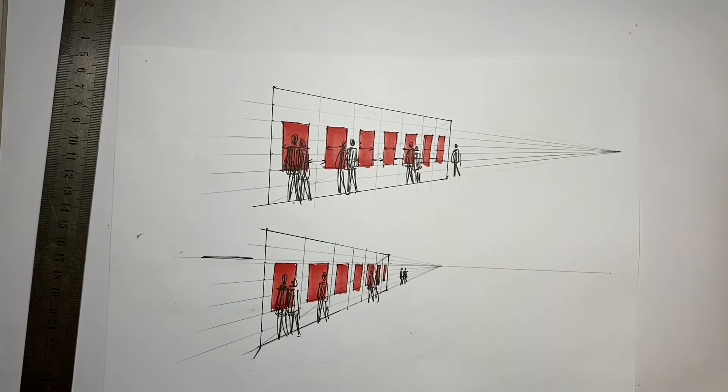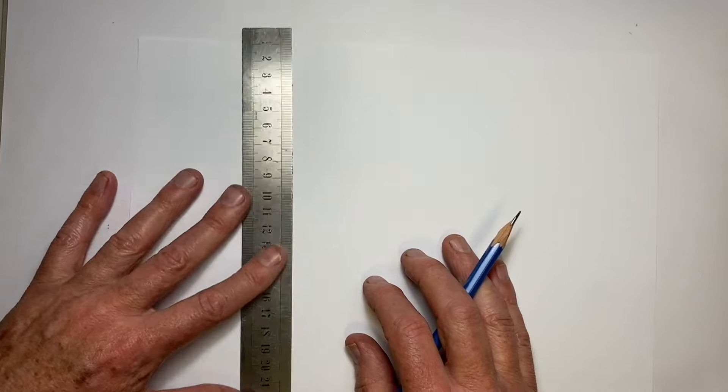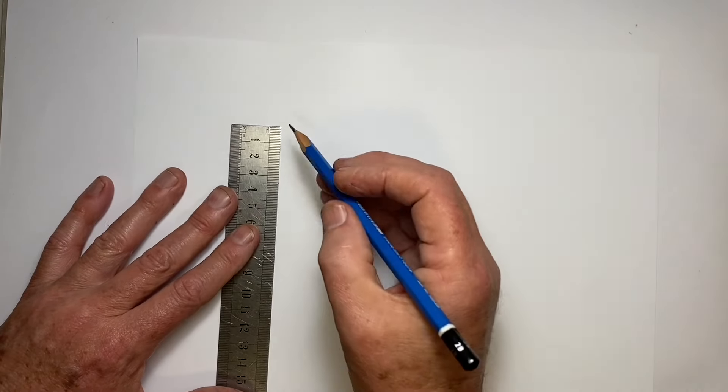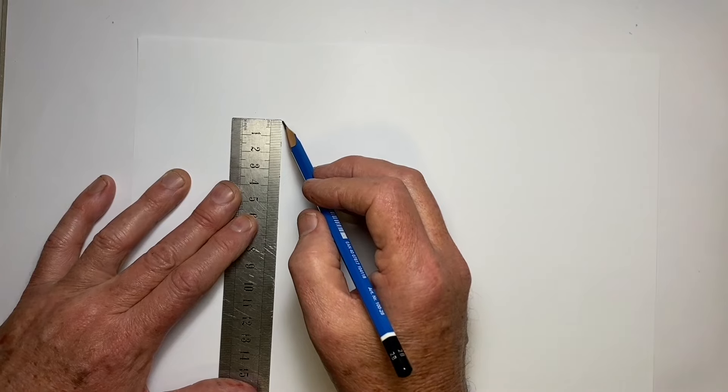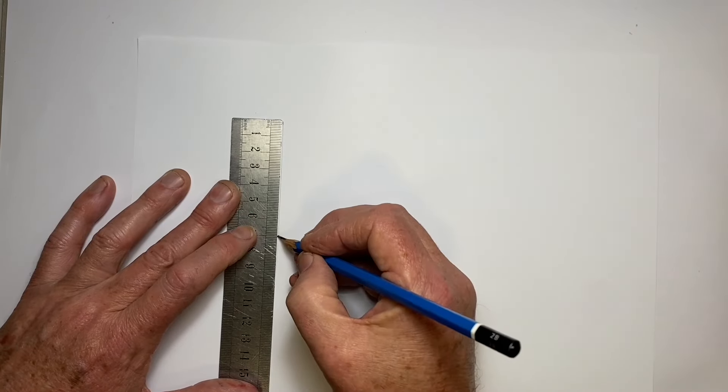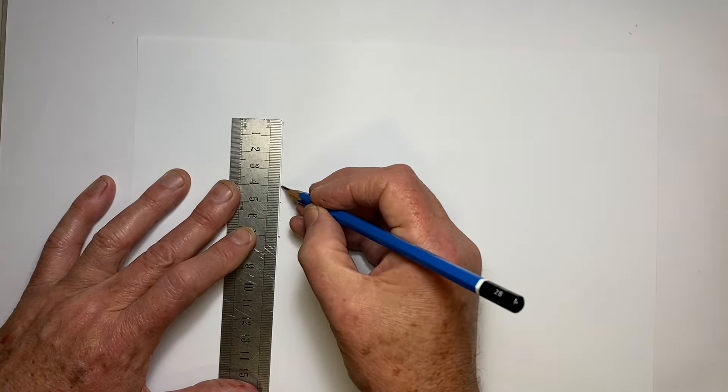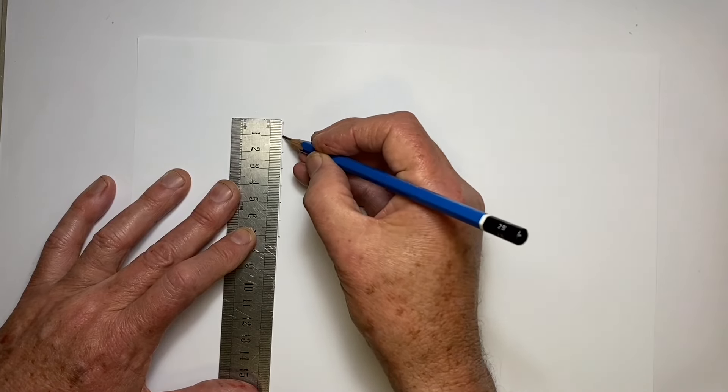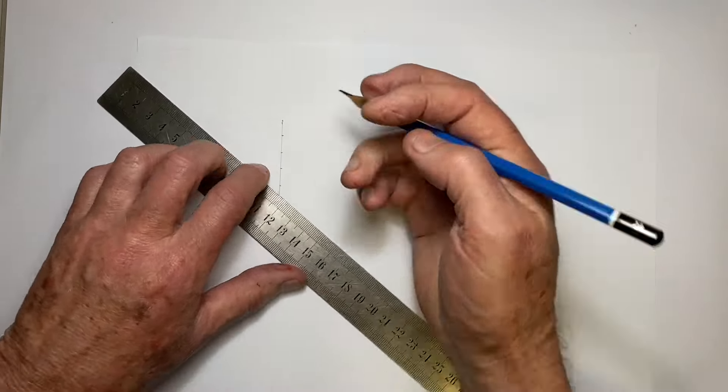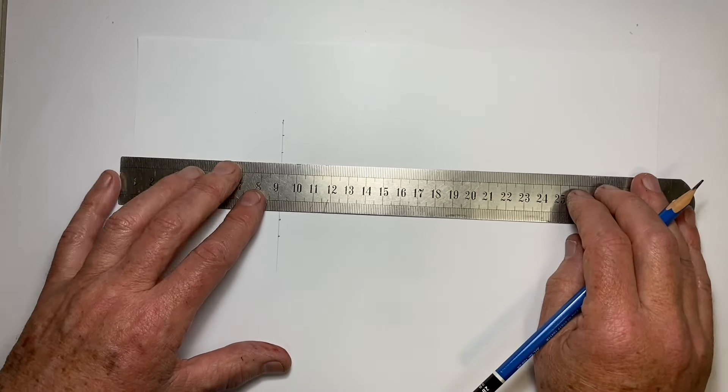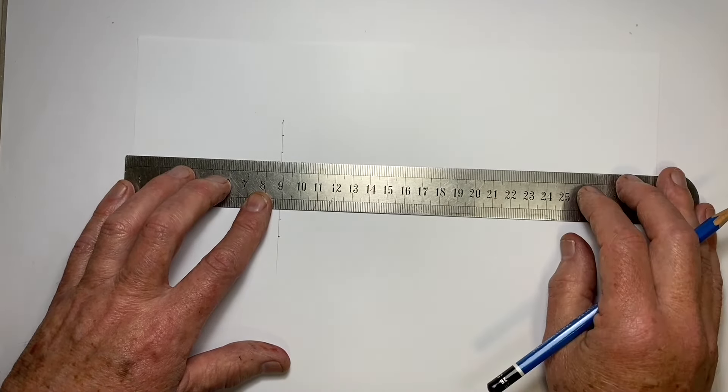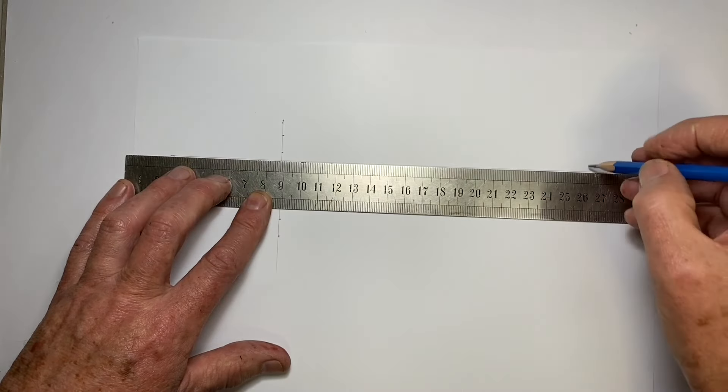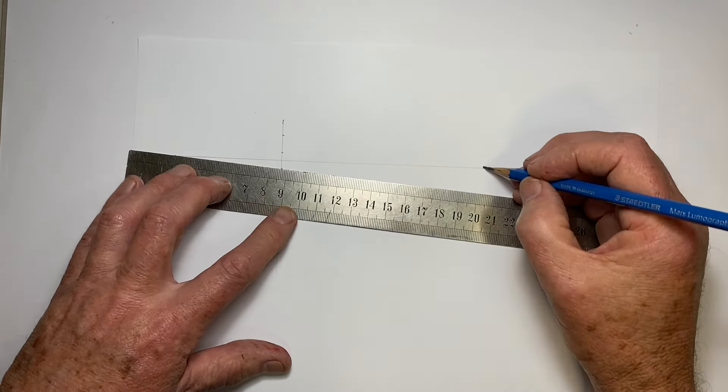This is a sure indication that the perspective is pretty much spot on. But this isn't just a technique for putting windows into walls - it can be used for any repeated architectural element to ensure that the foreshortening, the visual compression as the wall moves or the building moves further away from us, is correct. So let me apply this same technique to spacing seven columns correctly.